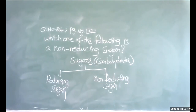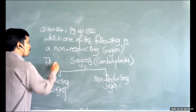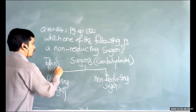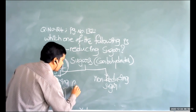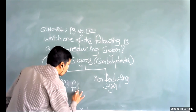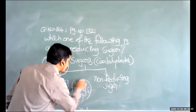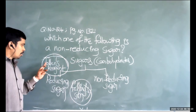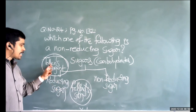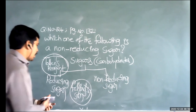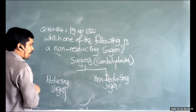As discussed in the last video, reducing sugars can reduce Tollens' reagent and Fehling's solution. When Tollens' reagent or Fehling's solution is not reduced by a sugar, that sugar is called a non-reducing sugar. To reduce, an aldehyde group is required — or a ketone group where the alpha carbon contains hydrogen atoms.